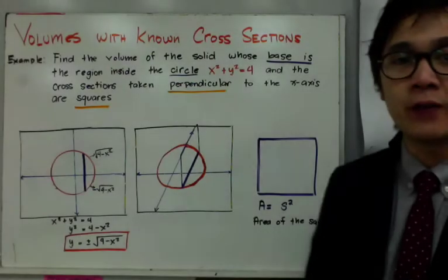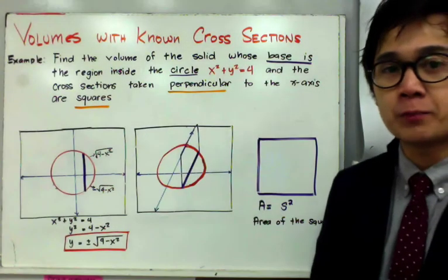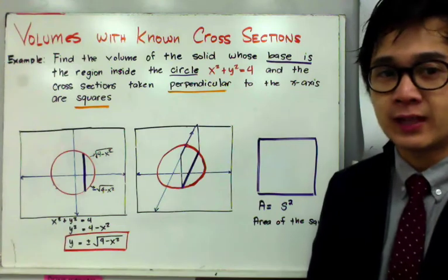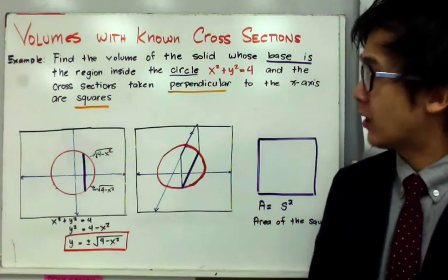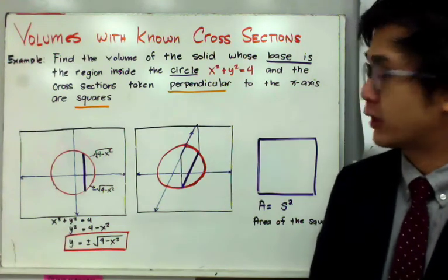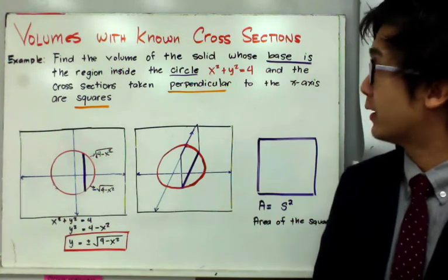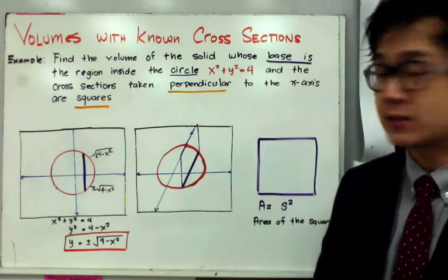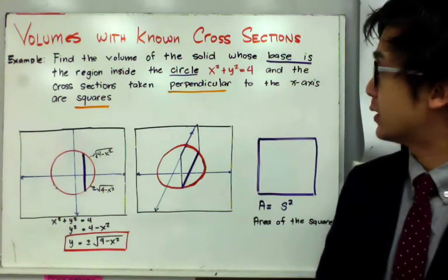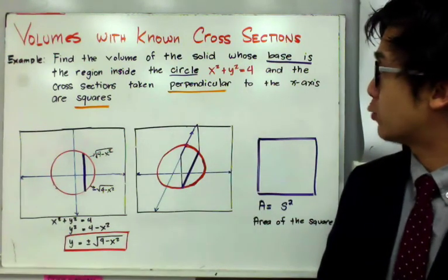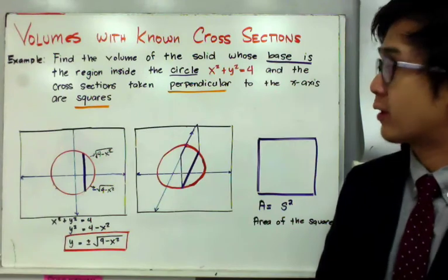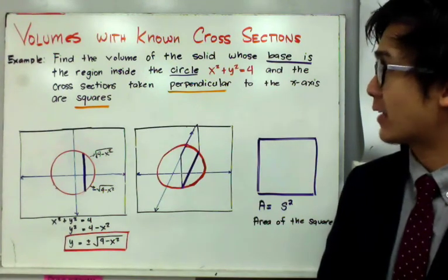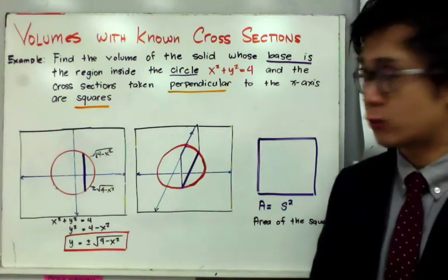Today we're going to be working on finding or computing the volume of a solid with known cross-sections. In this example, we're going to find the volume of the solid whose base is the region inside the circle x² + y² = 4, and the cross-sections taken perpendicular to the x-axis are squares.